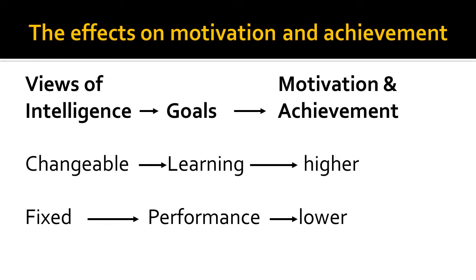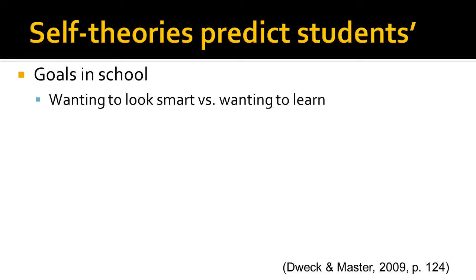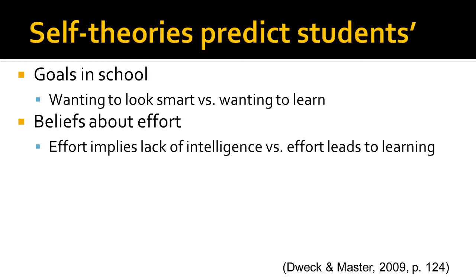Let's examine a little more closely why researchers have found this to be true. These self-theories predict students' goals in school. Those with performance goals want to look smart, whereas those with learning goals want to learn the material. Self-theories also predict students' beliefs about effort. Students with fixed views of intelligence believe that effort implies a lack of intelligence. They believe that if you have to put forth a lot of effort, then you must not be that intelligent or smart — otherwise, you wouldn't have to try so hard.